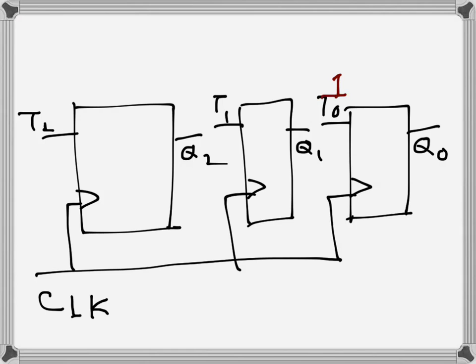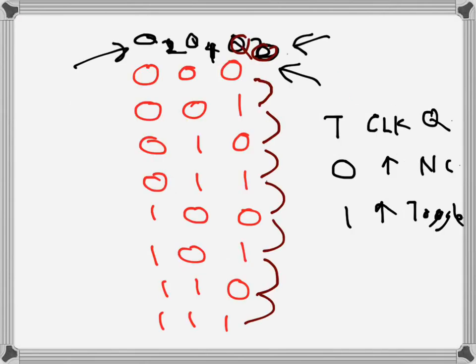Now let's look at Q1. Q1 is toggling here, again toggling here, again here, and here. After this we will have this because it's a counter that will keep counting.